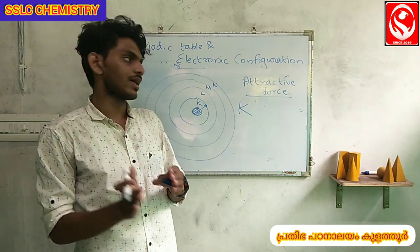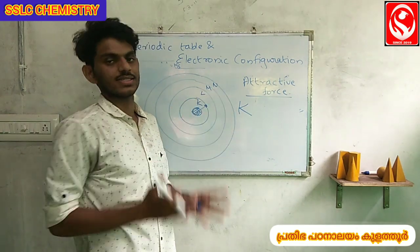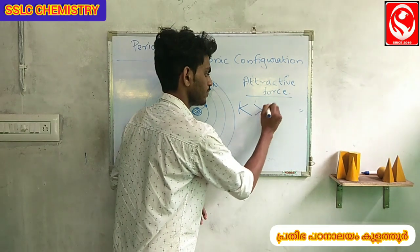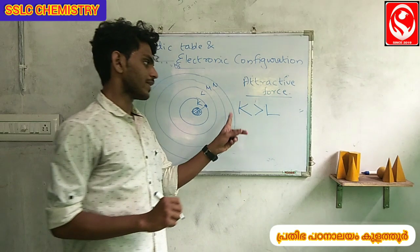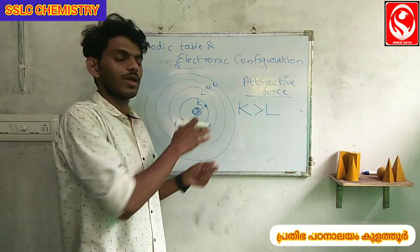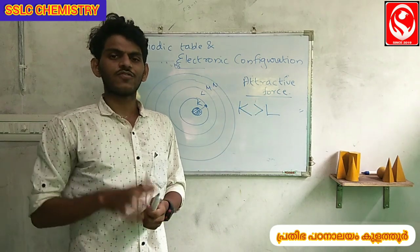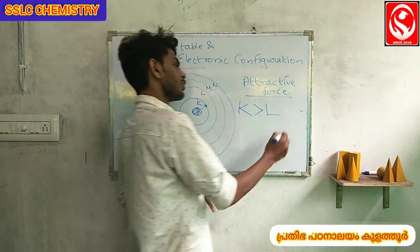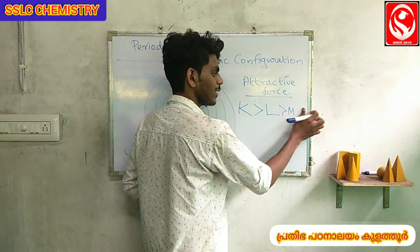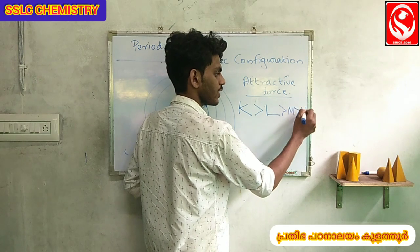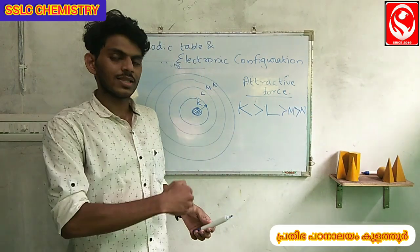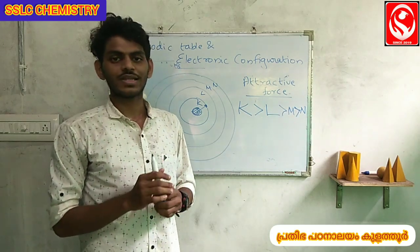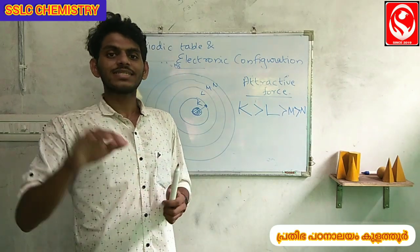Because the distance from the nucleus increases, the force of attraction on the L shell electrons is less than on the K shell electrons. The further the shell, the less the nuclear attractive force on those electrons.